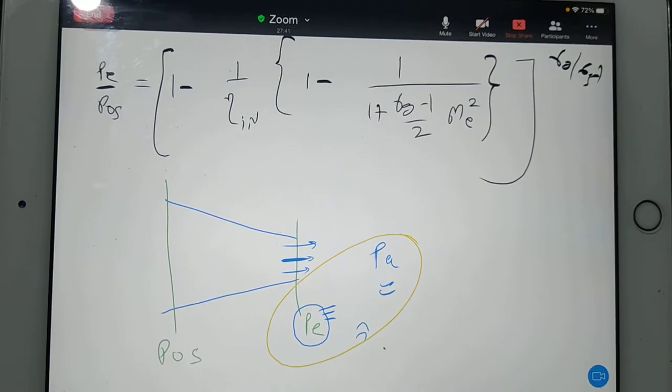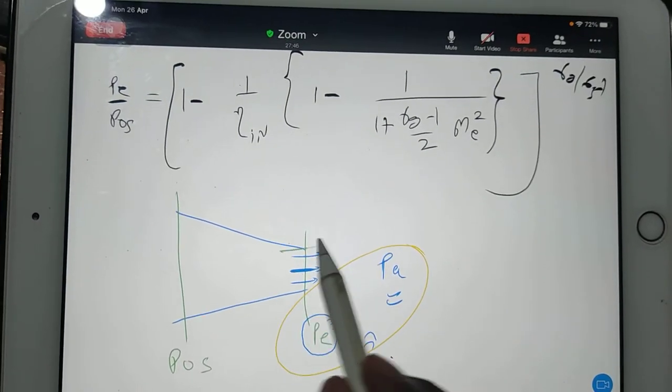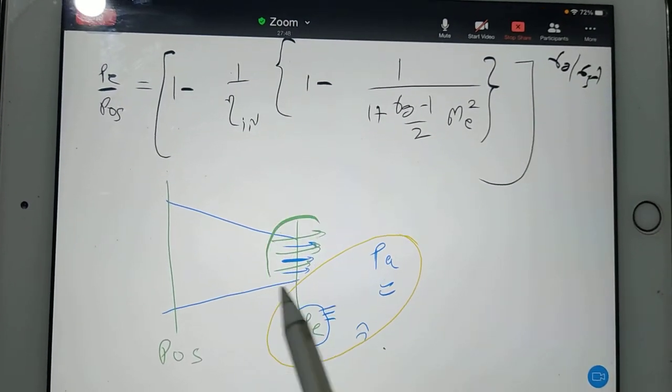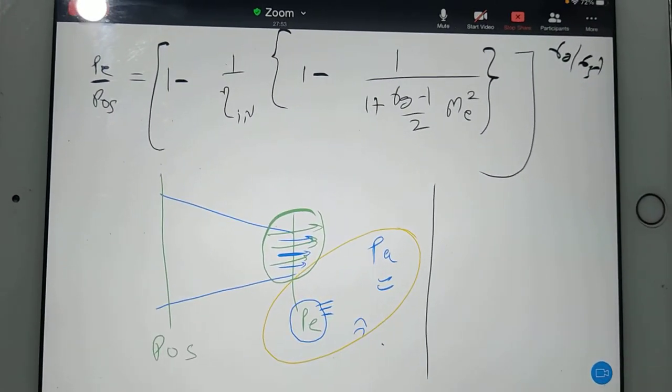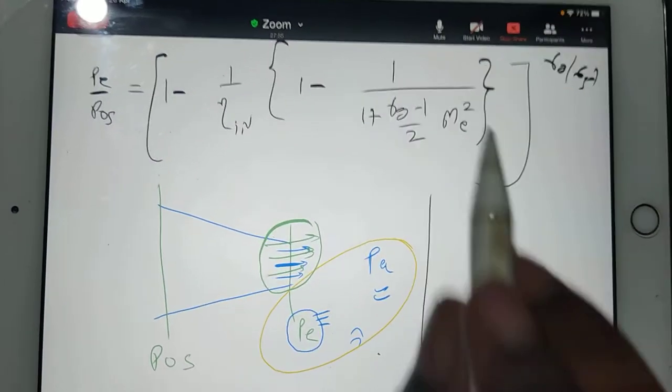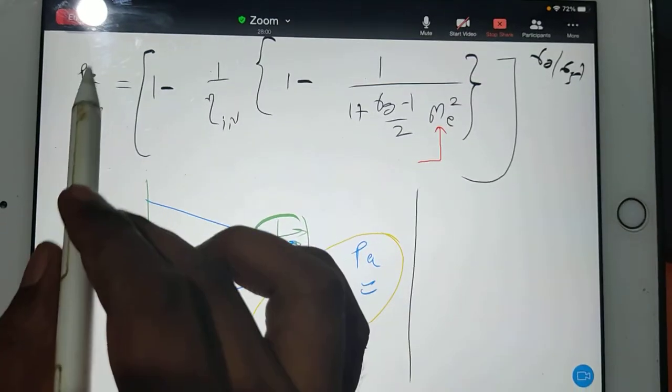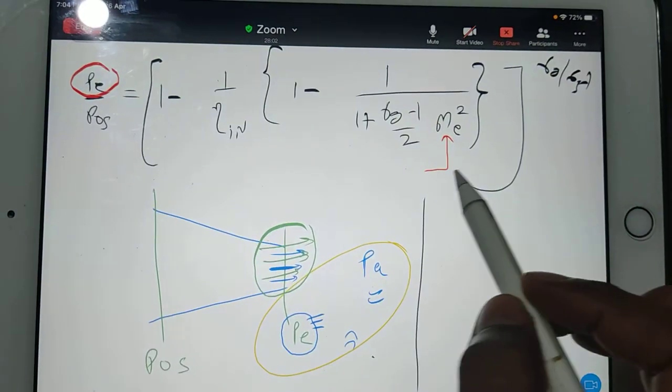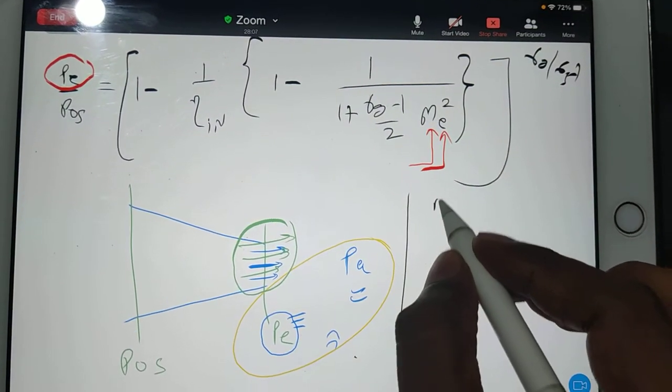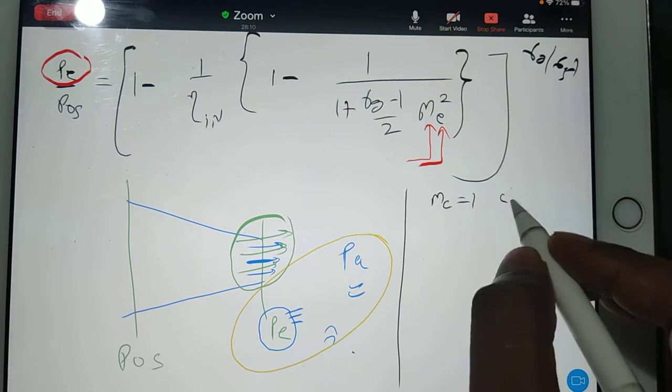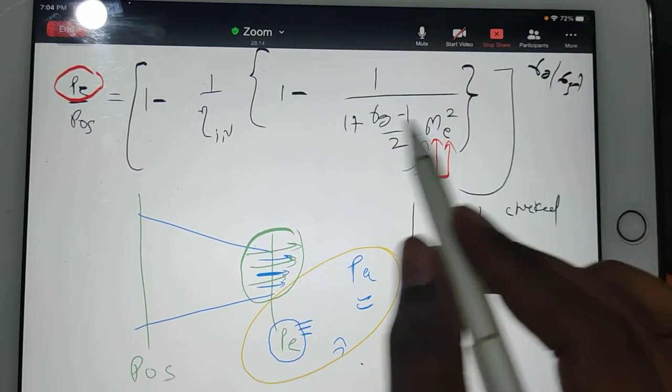For that purpose, whatever is happening here, don't bother. First of all, theoretically, you do one thing quickly: theoretically, not in real life, you imagine what will be your exit pressure if your Mach number is one. I mean, theoretically, what should be the exit pressure if your me is equal to one? It means the nozzle is choked. For the choked condition, you substitute one here.